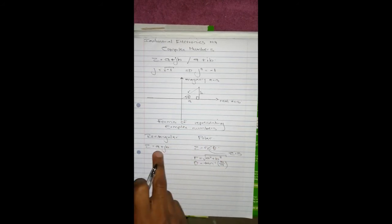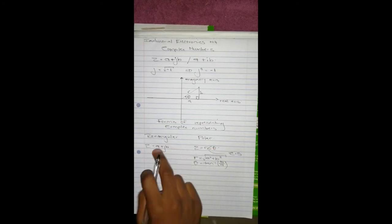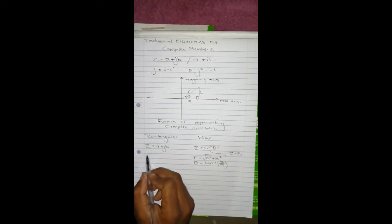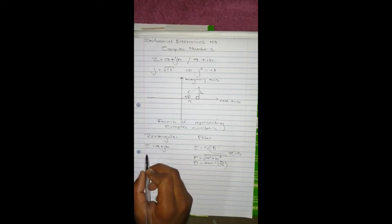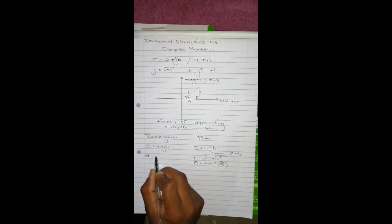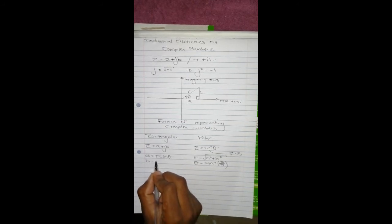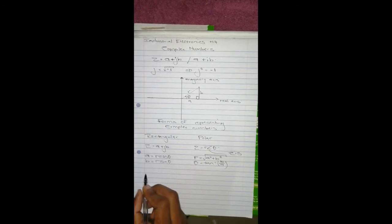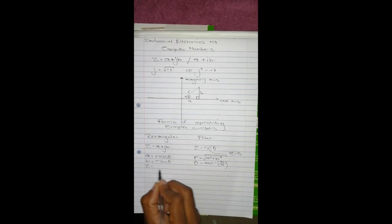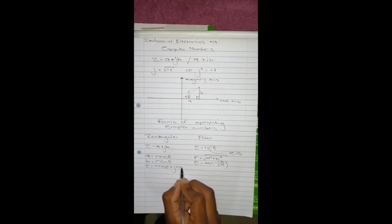And in case that you are given the polar form and you have to convert this polar form to the rectangular form, what you do is that 'a' becomes r cos theta, and 'b' becomes r sin theta. As a result, this becomes r cos theta plus j r sin theta. So these are the basics, the basic forms of complex numbers.